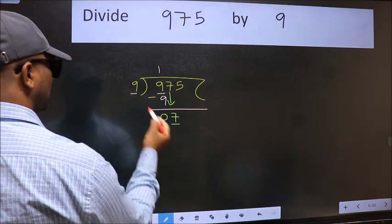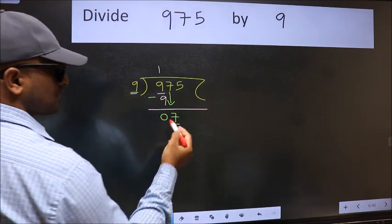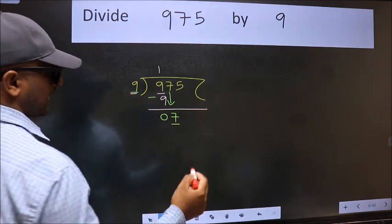Now here we have 7 and here 9. 7 is smaller than 9. So we should bring down the second number.